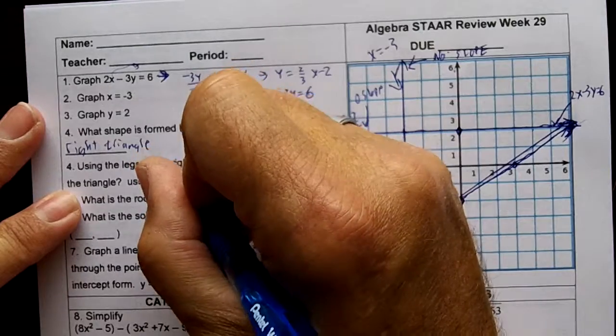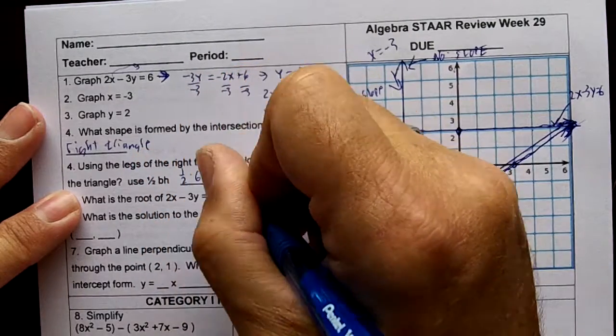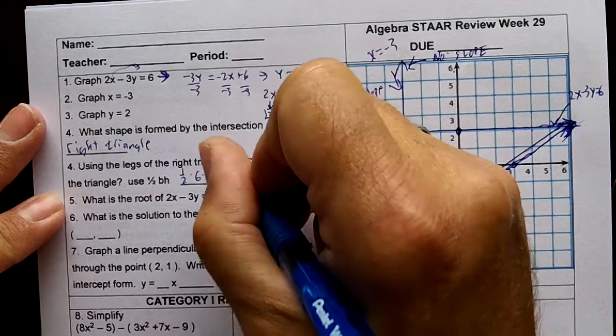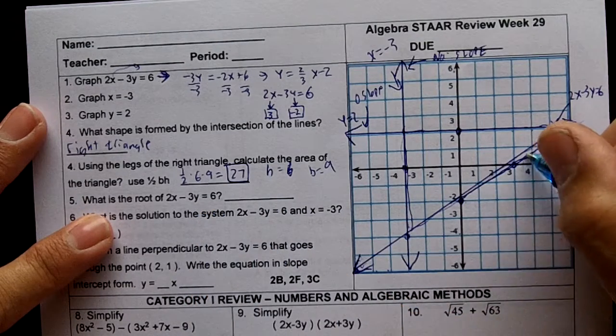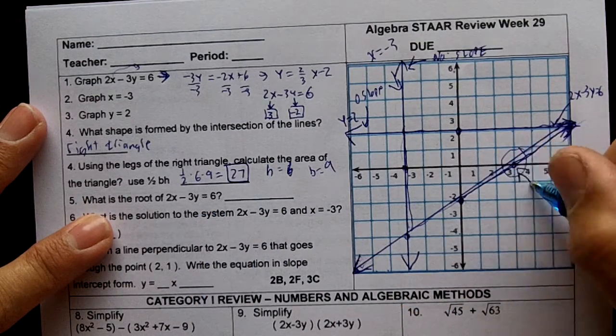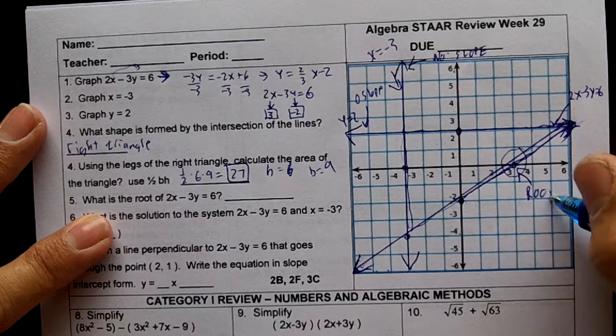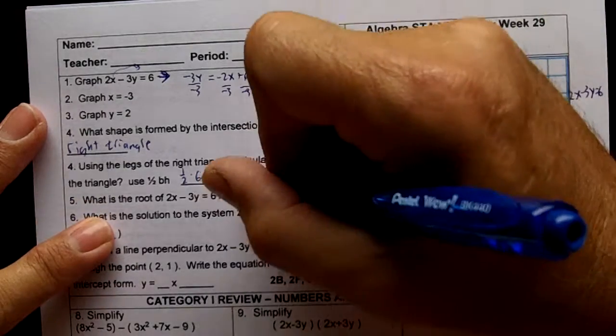What is the root of 2x minus 3y equals 6? The root is where it crosses the x-axis, same thing as a parabola, so the root would be three.